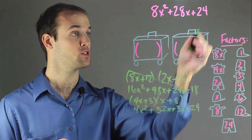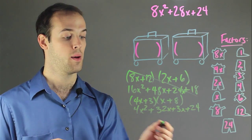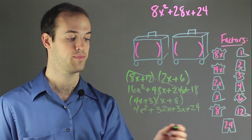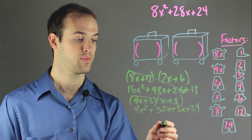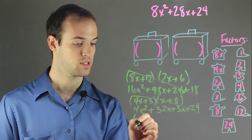And now you can see we're getting closer. We've got the 24 right, but we don't have the x squared term or the middle term right. So this isn't going to quite work. But I know I'm close, so let's try again.